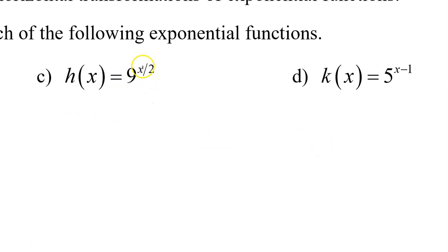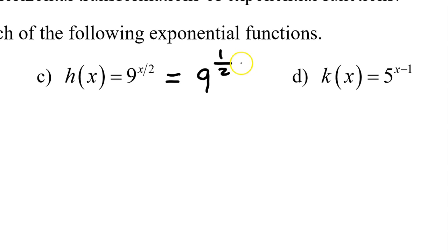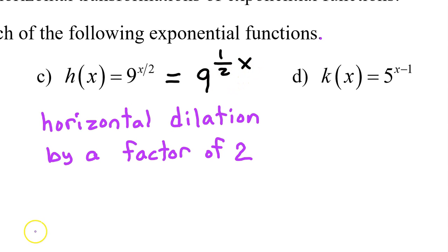9 to the x divided by 2 power is the same thing as 9 to the 1 half x power. The reciprocal of 1 half is 2, so this gives a horizontal dilation by a factor of 2.